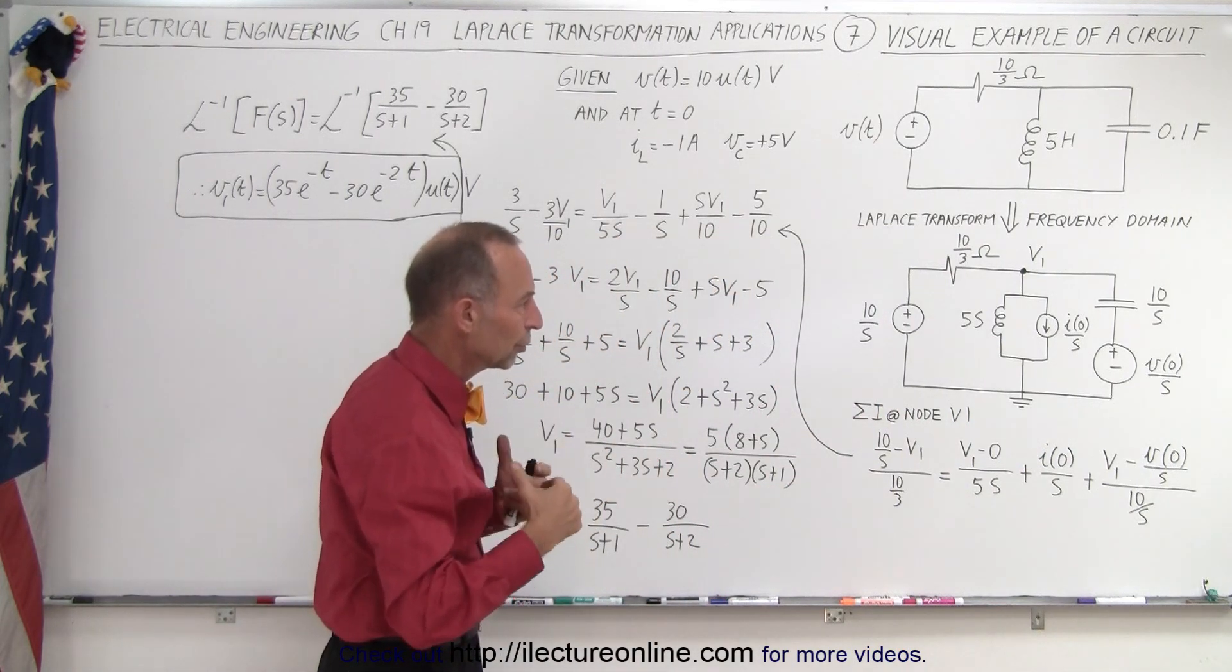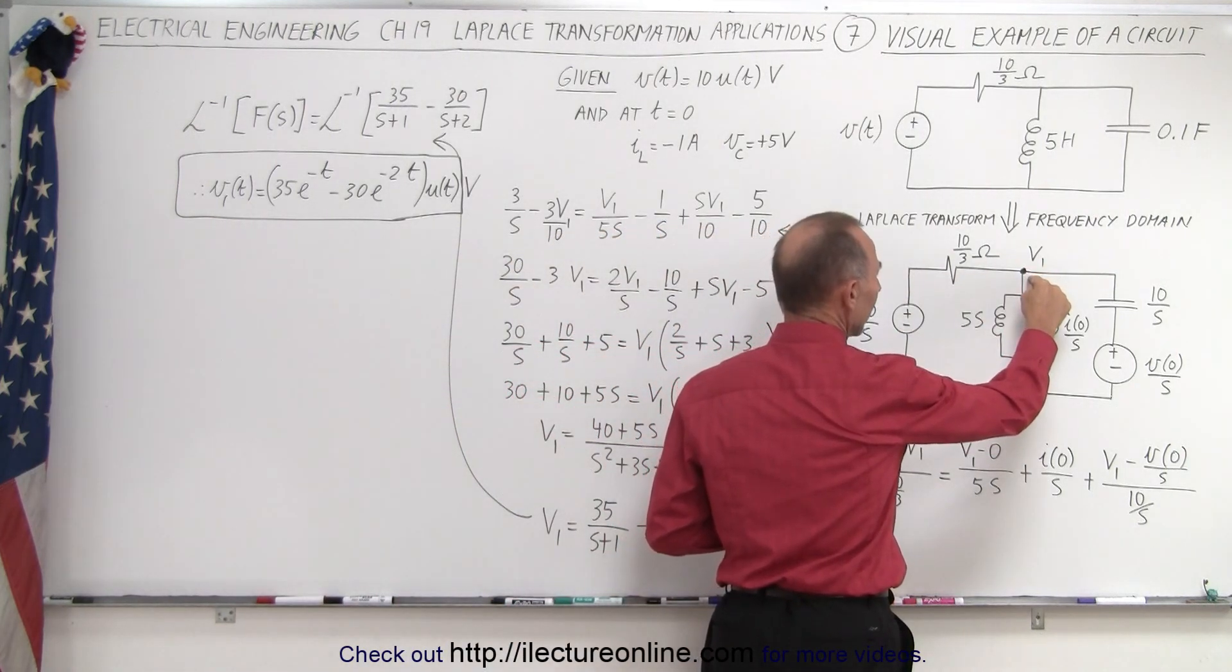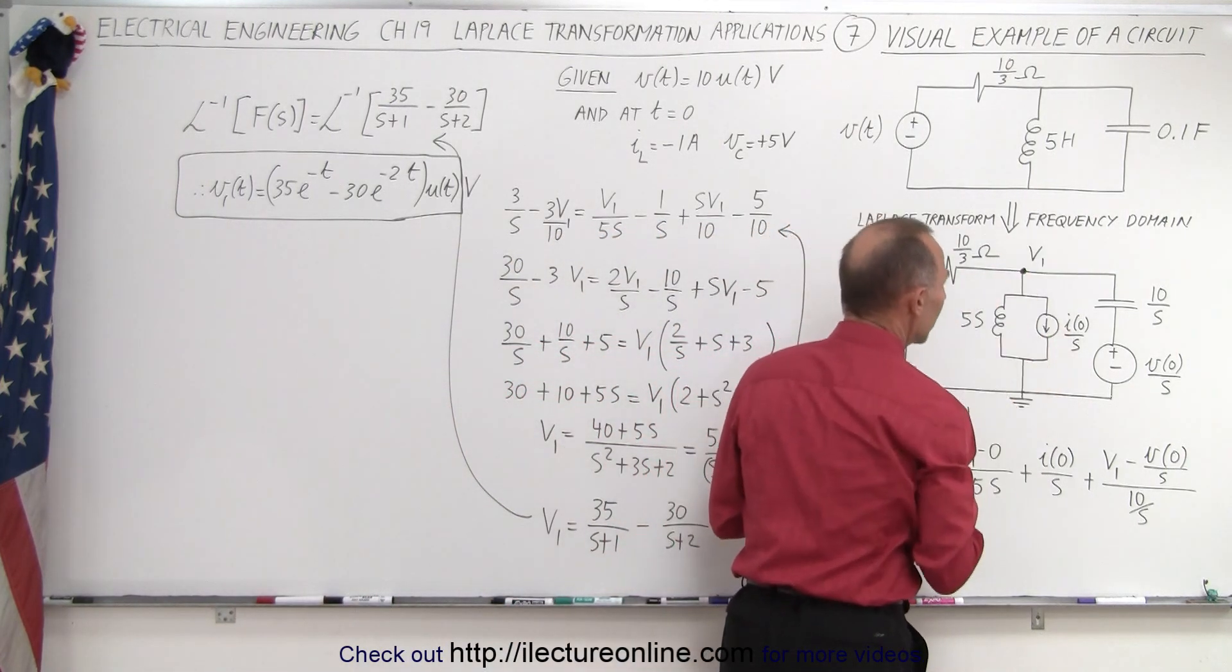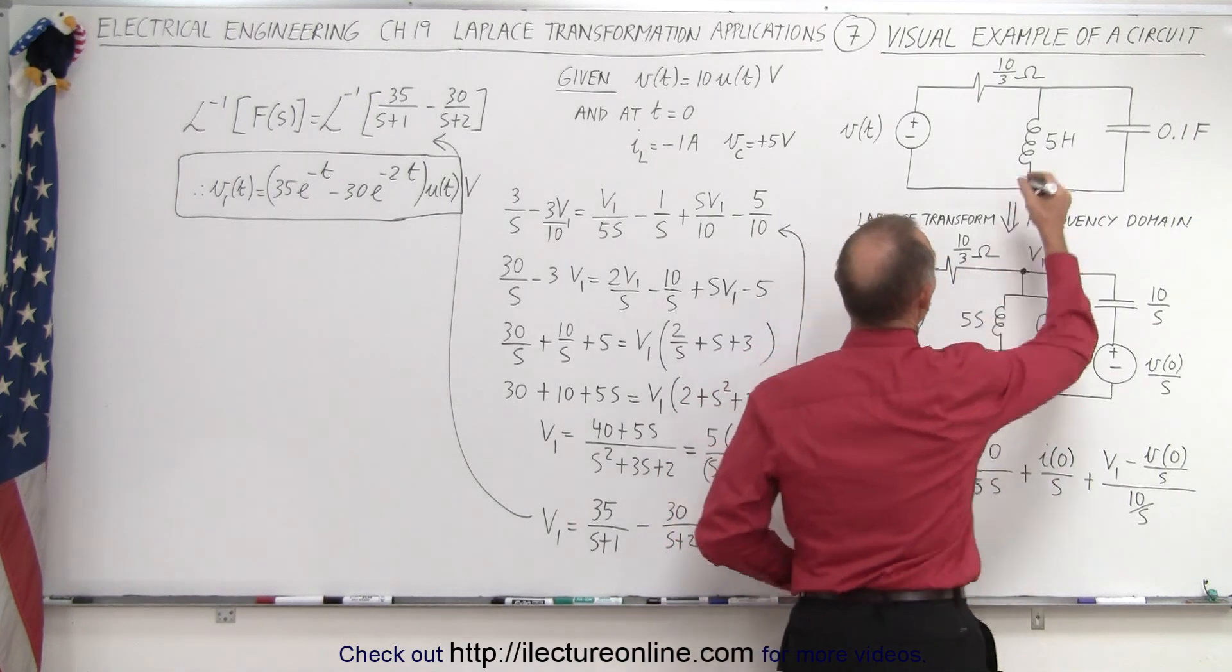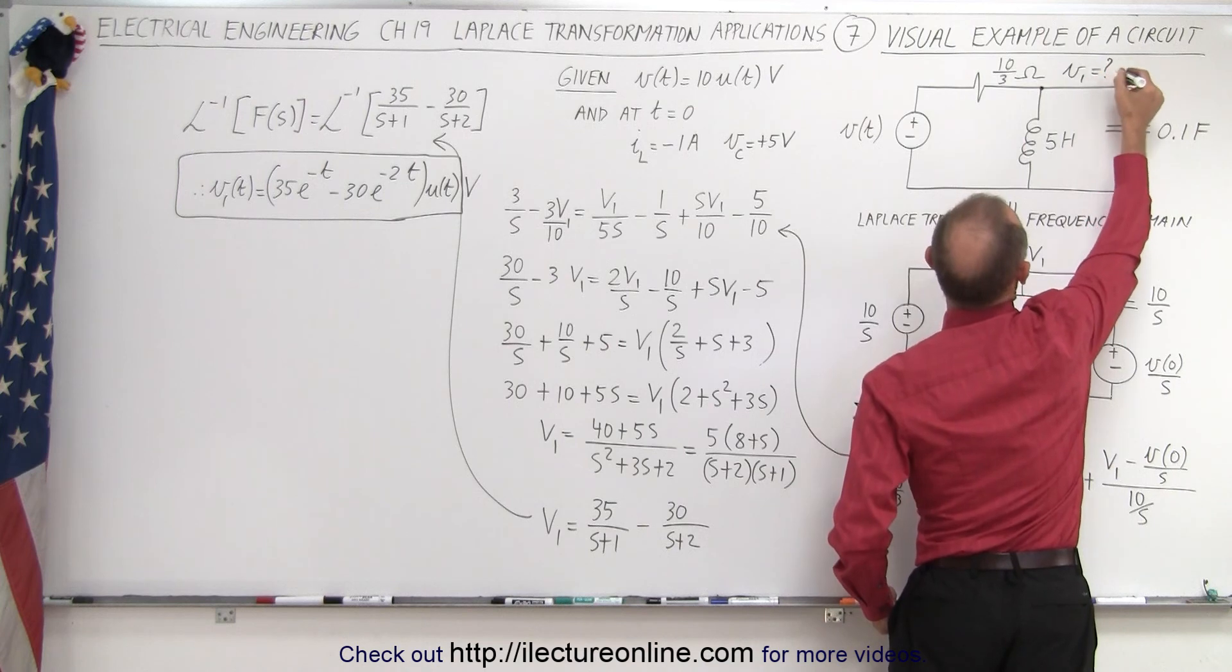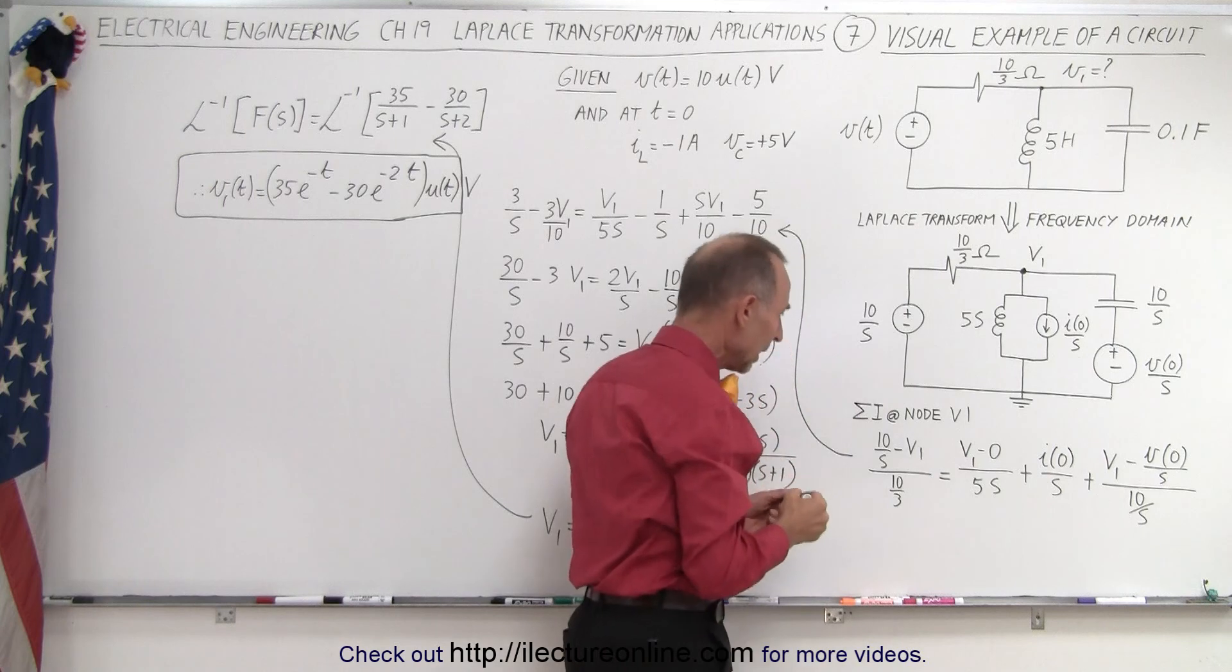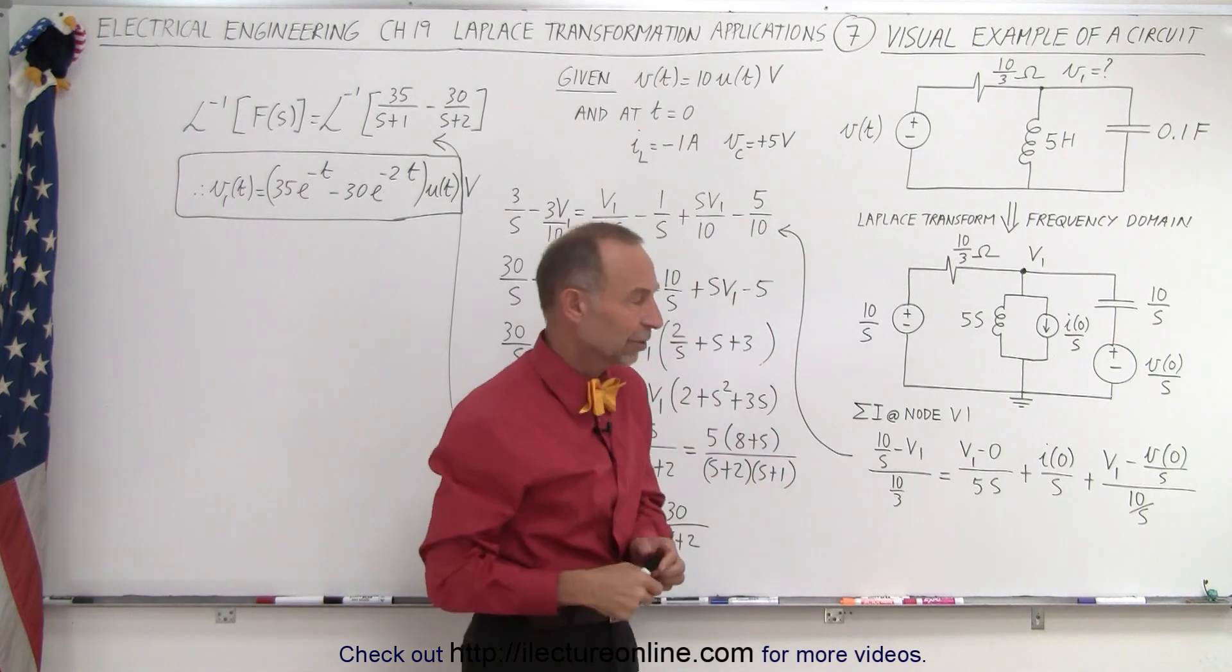What we're going to do now is add up all the currents at the unknown node V1, because we want to know what the voltage at this node is. What is the voltage equal to as a function of time? We need to solve for this V here, and we're going to do that in the frequency domain.